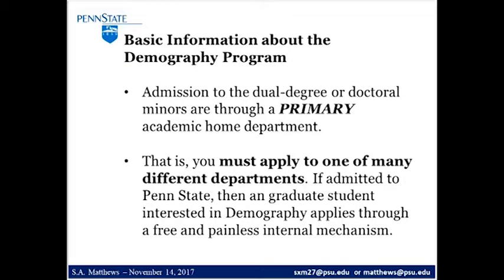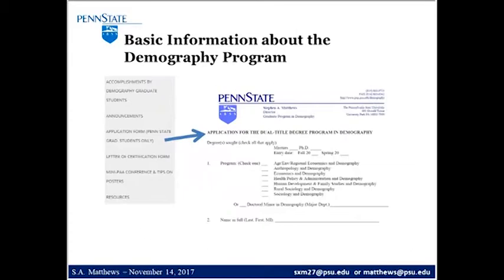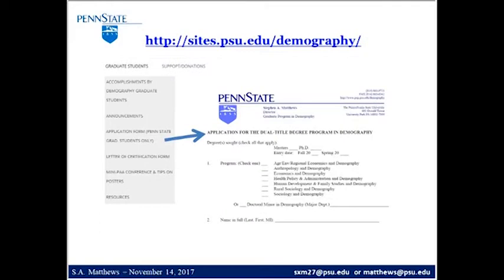A lot of people contact me about admission to the demography program, but the reality is that you are first admitted to Penn State. You must be admitted to the graduate program — we get about half our students from Sociology. If admitted by Sociology, then it's a very simple, free, and painless process. I'm the person who approves your entrance into the dual degree. It's a simple three-page form on our website — an application form for Penn State graduate students only — that allows me to draft a memo to the graduate school formally requesting that you are a member of the demography program so that when you graduate, you will have a dual degree.